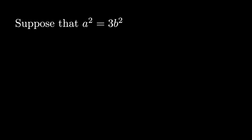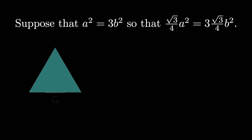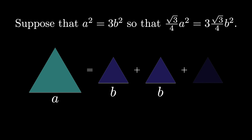The proof that the square root of 3 is irrational is almost identical. Let's imagine that a squared equals 3b squared where a and b are integers, so that the square root of 3 is the rational a over b. This means that the square root of 3 over 4 times a squared equals 3 times the square root of 3 over 4 times b squared, as we multiplied by the constant square root of 3 over 4. This assumption implies that the area of an equilateral triangle with side length a equals the sum of the areas of three equilateral triangles with side lengths b.